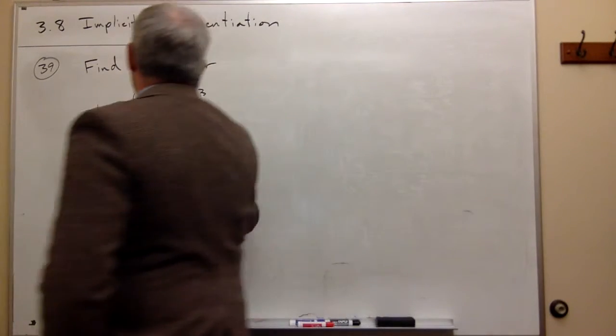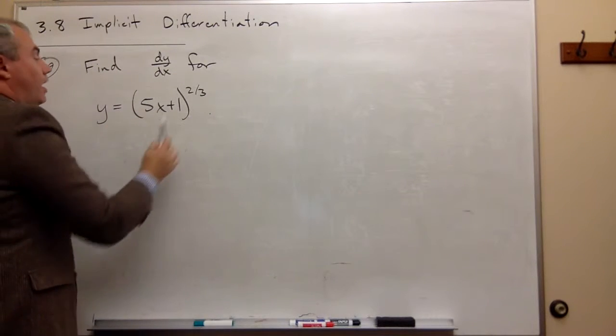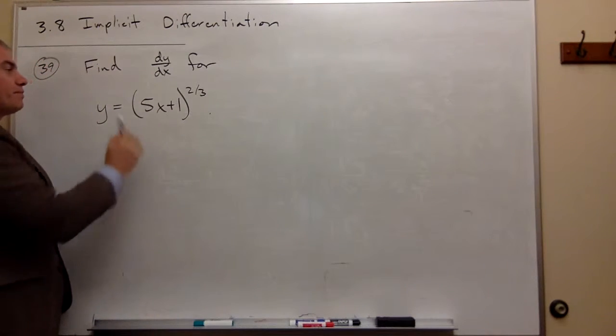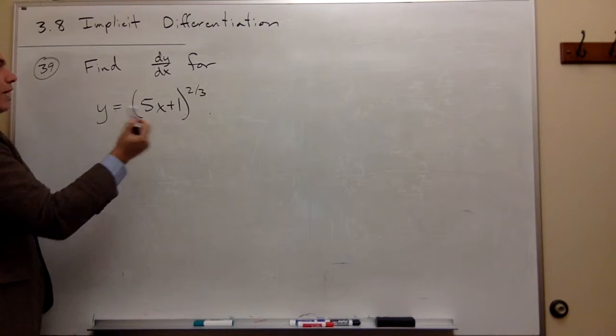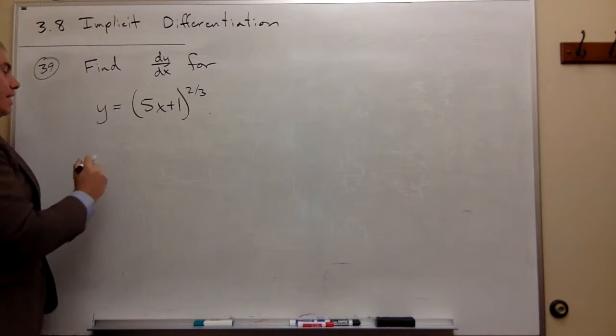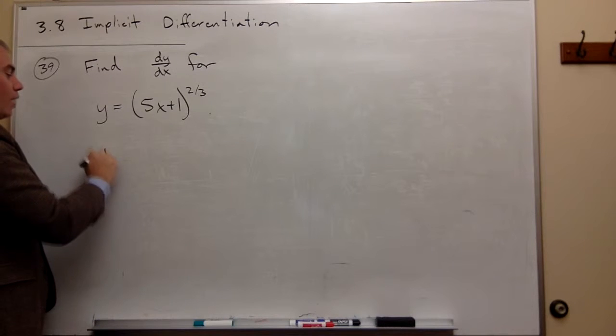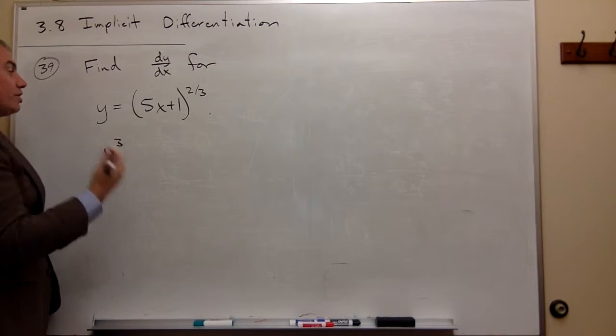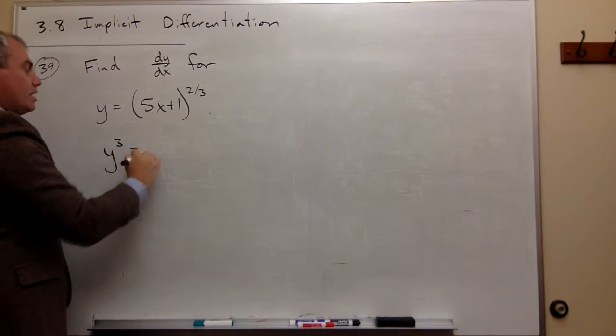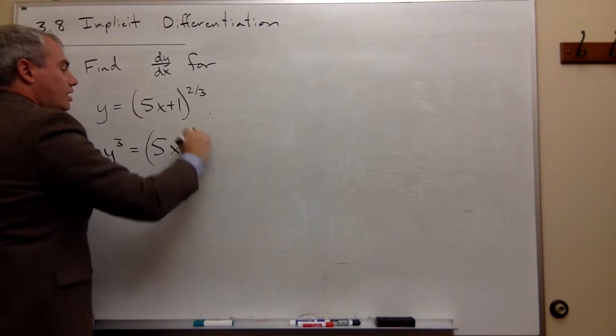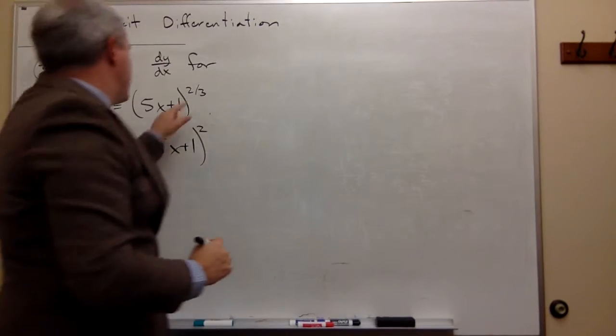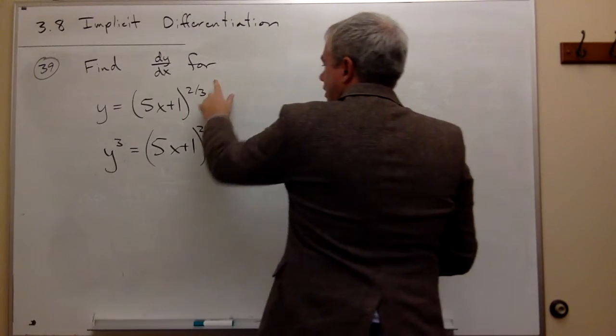So what I'm going to do is raise both sides to the third power. I could rewrite this as the following: y³ is equal to (5x + 1)², because 2/3 cubed is squared.